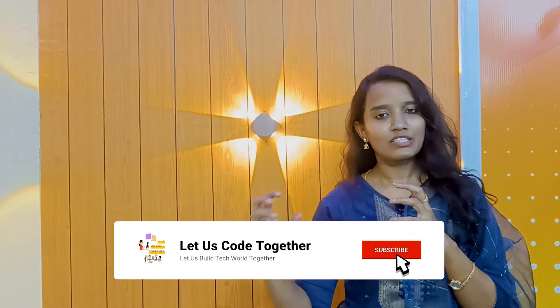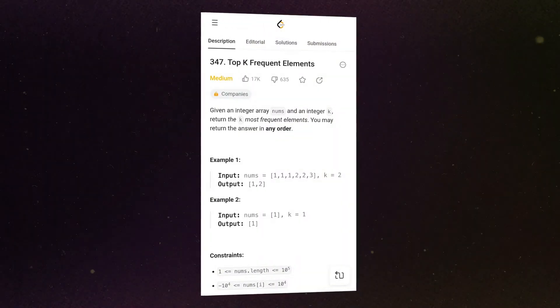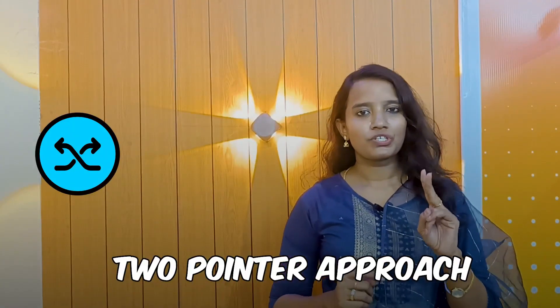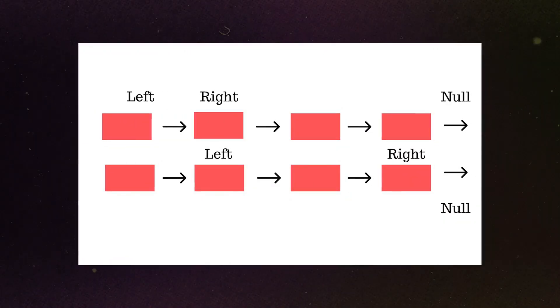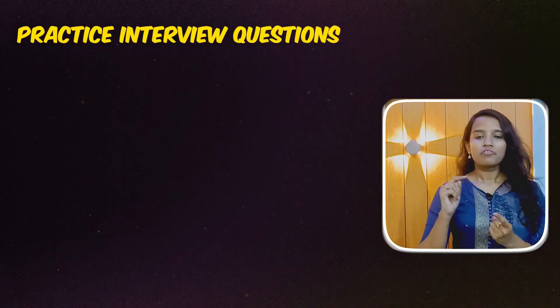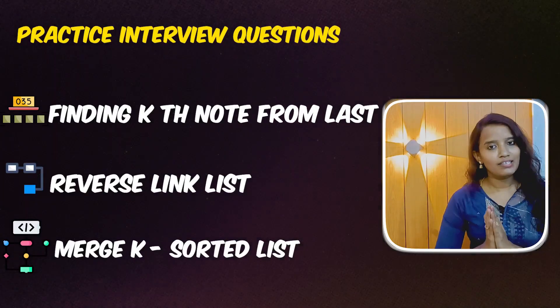When solving a linked list problem, use two pointers. For example, finding the kth node from the last is an important problem. Use two pointers — start one pointer k nodes ahead, then when the first pointer reaches the end, the second pointer will be at the kth node from the last. Practice questions: find the kth node from the last, reverse linked list, merge k-sorted lists.